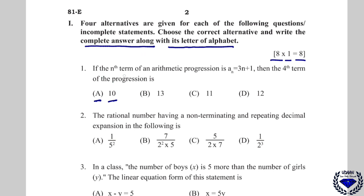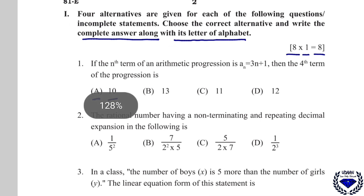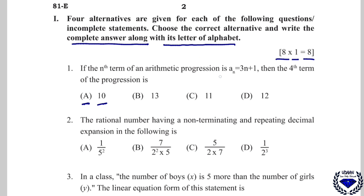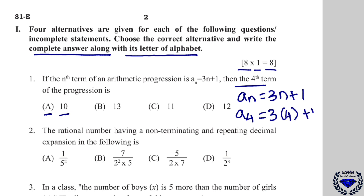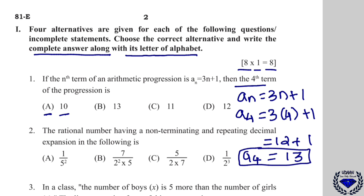Question number 1: if the nth term of an AP is AN = 3N + 1, find the 4th term. The 4th term is A4, so substitute n = 4: 3×4 + 1 = 12 + 1 = 13. The correct answer is option B, which is 13.